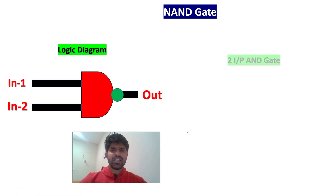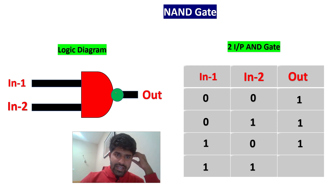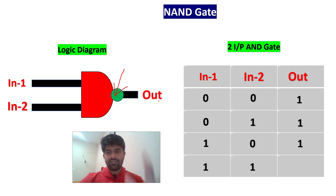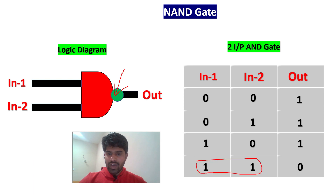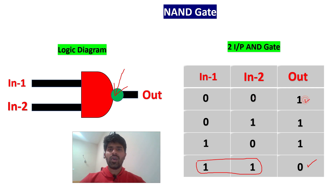This is the NAND gate. The only difference between NAND gate and AND gate is there is one NOT gate here. In the AND gate, if both inputs are one, output was one. But here it is just the reverse — if both inputs are one, output is zero. And if any input is zero, it doesn't matter, output will be one.